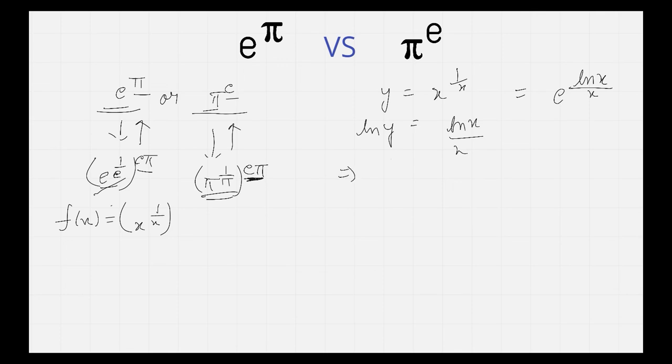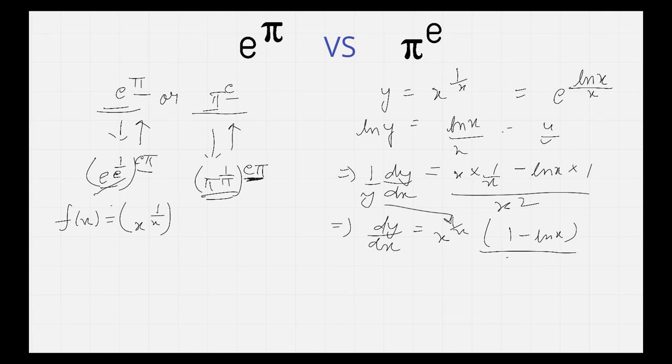So differentiating it with respect to x would be 1/y dy/dx equals to, this is u, this is v, v du minus u dv by v squared. dy/dx equals to x raised to power 1/x, which is y, times 1 minus ln x upon x squared.